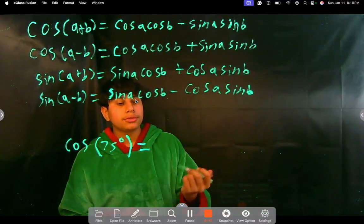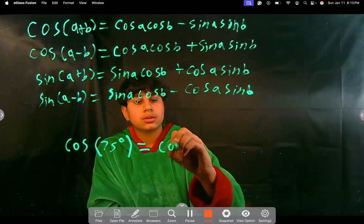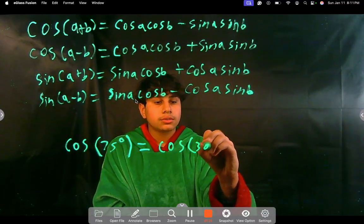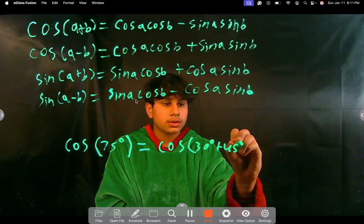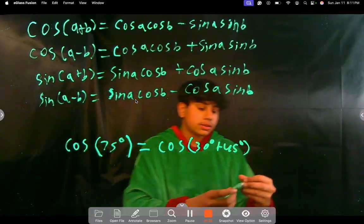Yeah, so we can use 30 and 45, right? So, it'll be cosine of 30 degrees plus 45 degrees, right? Because then, 30 plus 45, that's 75, right?